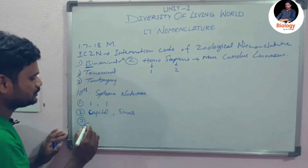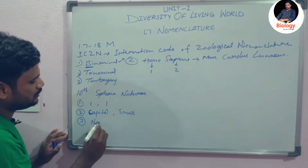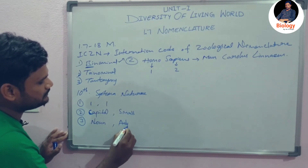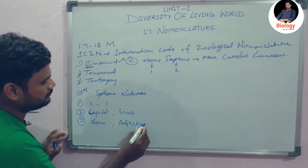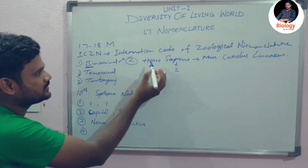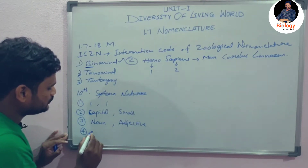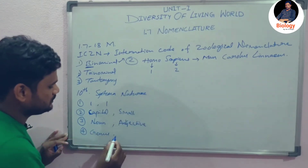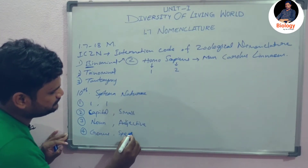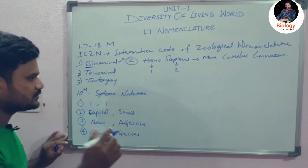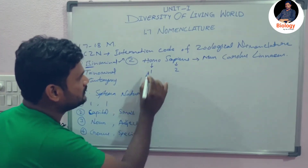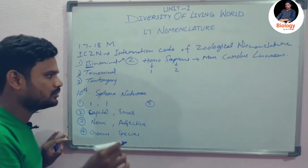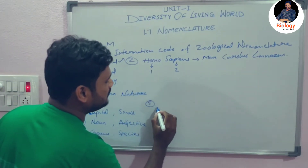The next rule is: the first word should be in noun form, and the second word should be in adjective form. The next rule is: the first word is denoted to genus, and the second word represents species. And the next rule is: if we write with a pen in a notebook, the two words should be underlined separately.